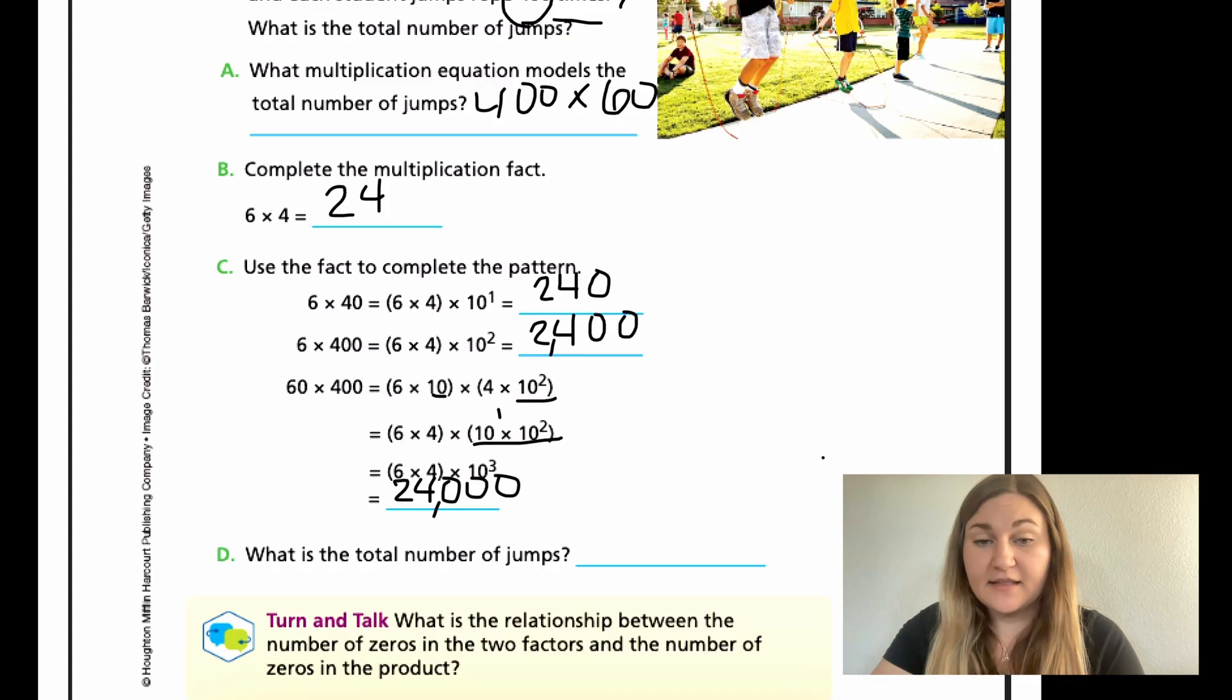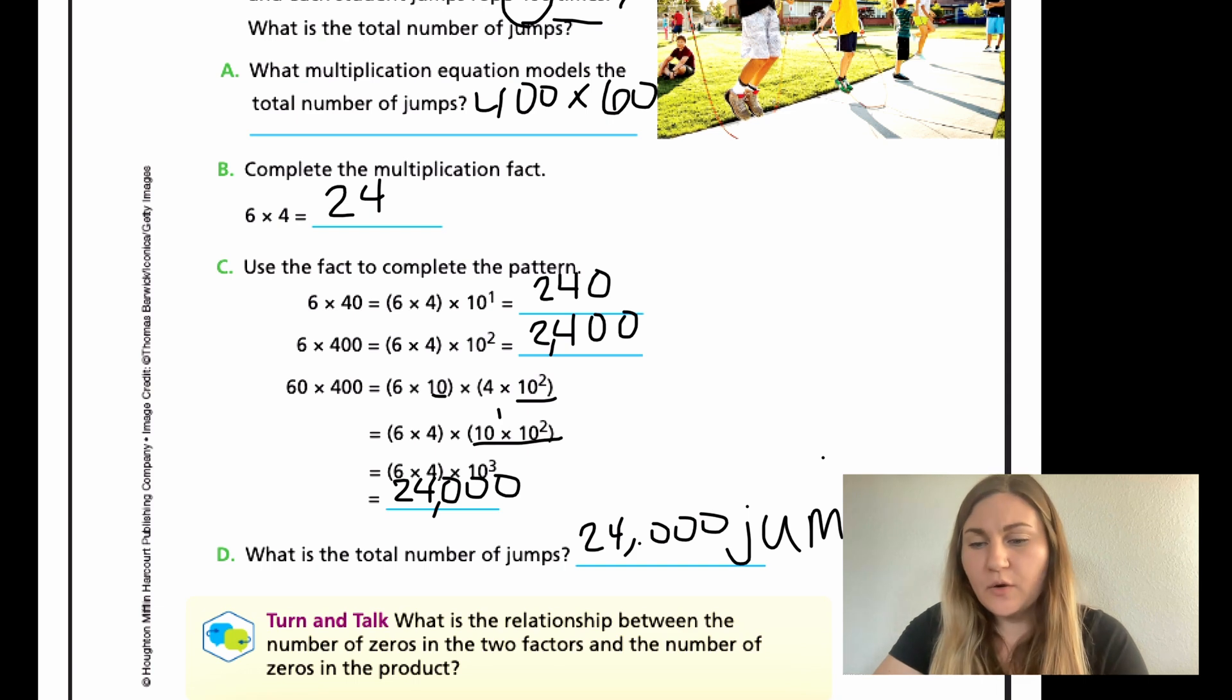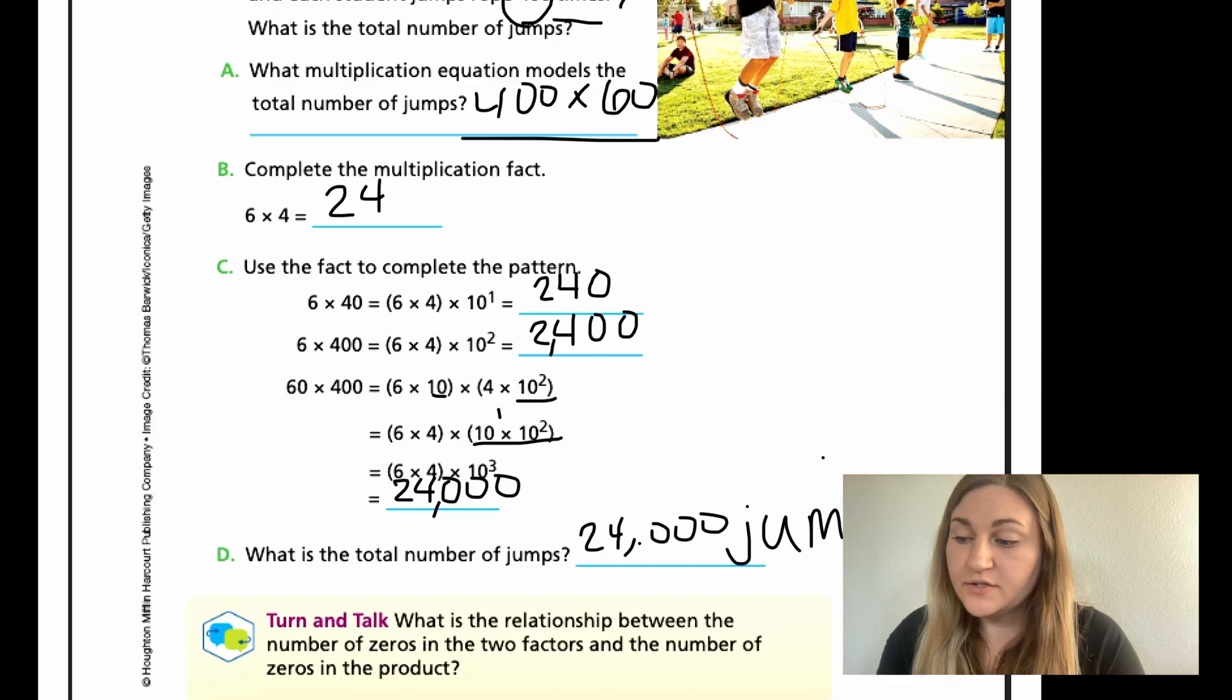Part D is asking that final question again. What is the total number of jumps? I have 24,000 jumps. I want to go over the turn and talk. What is the relationship between the number of 0s in the 2 factors and the number of 0s in the product? I have 1, 2, 3 zeros in the problem. How many in my answer? 1, 2, 3. They are the same.